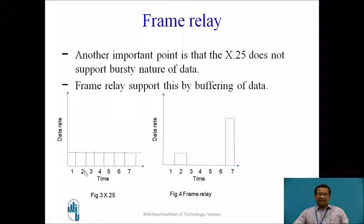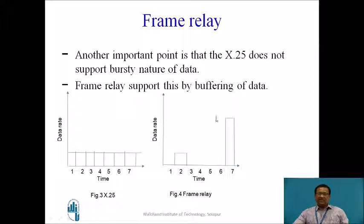On the X-axis we have time and on the Y-axis we have data rate. This constant nature of data is supported by X.25. Whereas in Frame Relay, the data is not constant — at some point in time there is data, at another time there is no data, and at another time there is a huge amount of data. This pattern is called bursty nature of data. X.25 does not support this because it is designed for constant data rate, whereas Frame Relay supports bursty data using buffering technique.